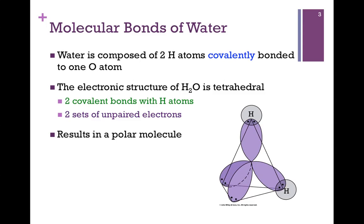Now, even though there are only two covalent bonds, the structure of water is actually tetrahedral, and that has to do with the fact that the oxygen atom also carries two sets of unpaired electrons. It's not a perfect tetrahedron, though, because they are unshared.